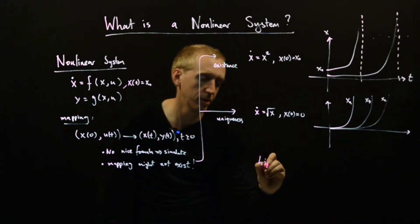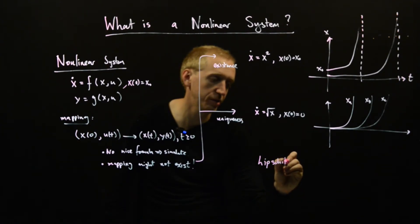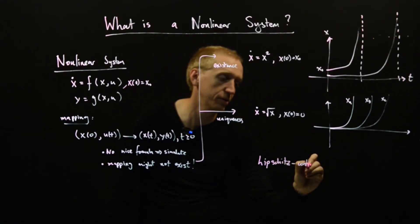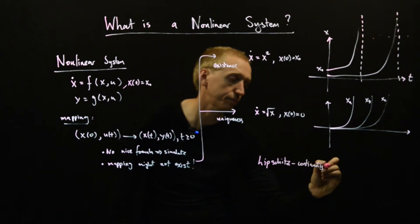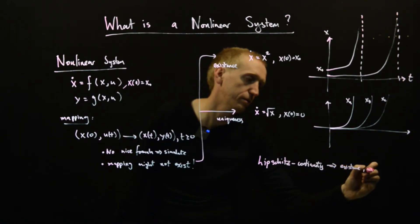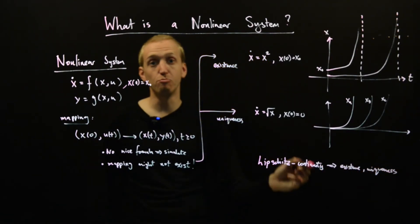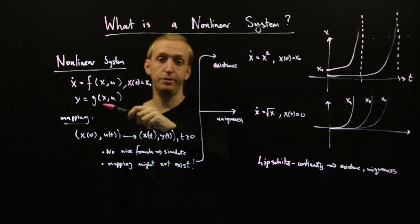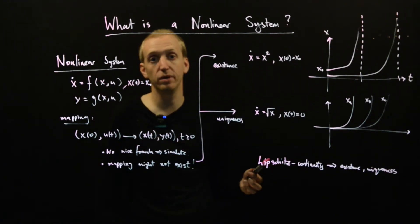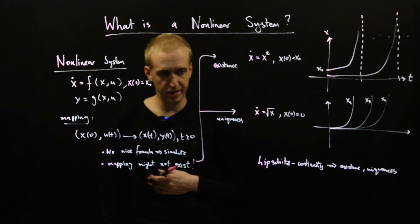So we're just going to forget about it. But maybe it's nice to know that there is something that can guarantee it. So it's called Lipschitz continuity, and this implies existence and uniqueness. And it's really quite a mild condition on f and g. So if f and g satisfy this thing called Lipschitz continuity, then you're guaranteed to have existence and uniqueness.